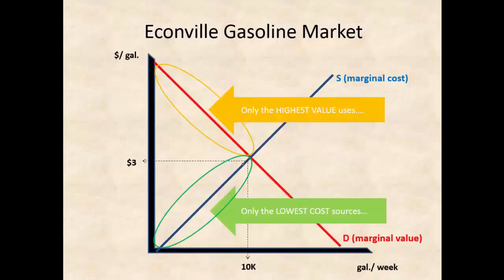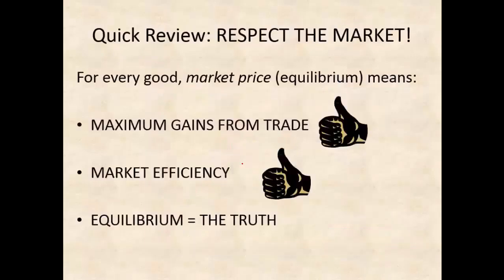All this is done automatically by people making their own decisions based on looking at the equilibrium price and deciding whether they should be buying, selling, or doing nothing at all. Equilibrium also tells the truth about the reality of the value and cost of any particular product.